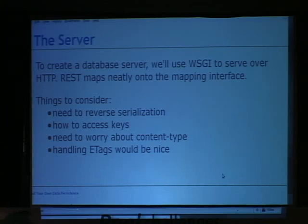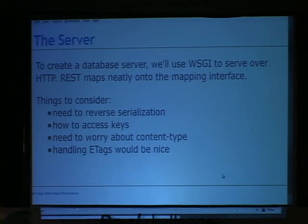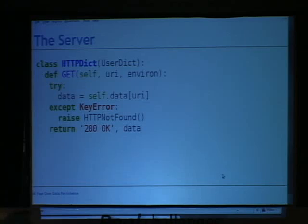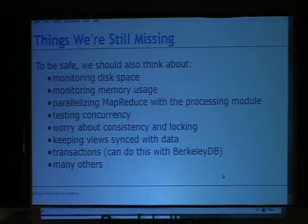We've got a MapReduce implementation wrapped around our data pipeline, but we can only access it from a Python application. The next step is creating a server — I'll breeze through this because I'm running out of time. It's a Whiskey interface. The mapping interface maps really well onto REST, so the server is pretty easy to implement. We need to think about reversing serialization, accessing keys, content type, and handling ETags. We define GET, POST, and PUT methods — POST creates a UUID for the document and returns a created code.